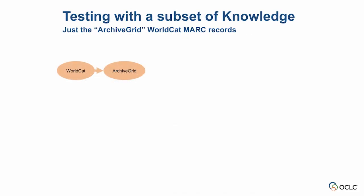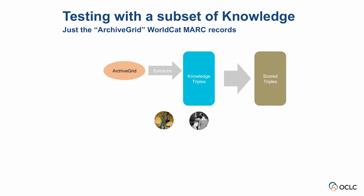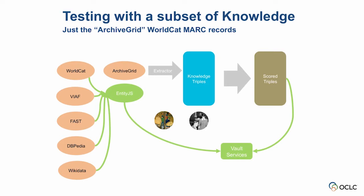Just a high-level overview of how it works: from our WorldCat data, we took a subset — an archival subset of that information, the data that drives ArchiveGrid. We went through this process and now have this data in the vault. Starting with the prototype application, we built these vault services — kind of an abstract term, but you can imagine the vault services being APIs: SPARQL queries into our triple store, or queries to the index that we use to make these things discoverable. The application itself talks to those, which then talks back to the knowledge vault.